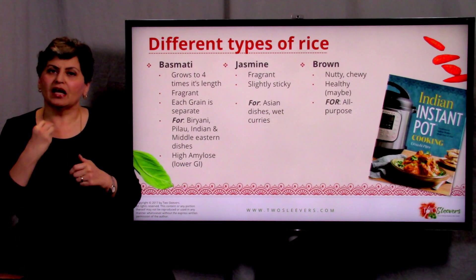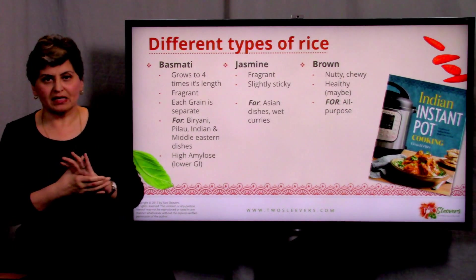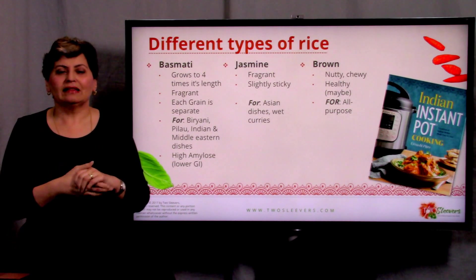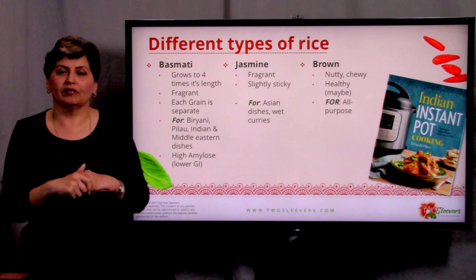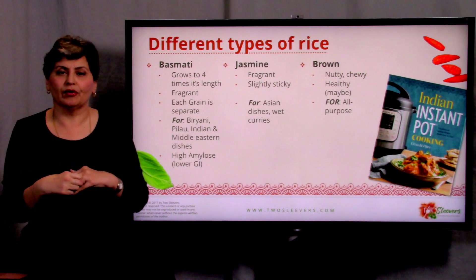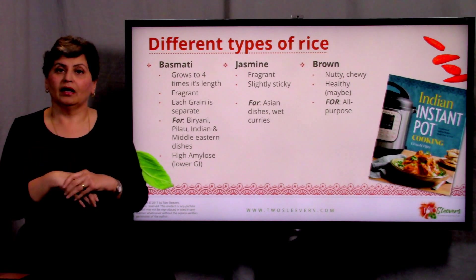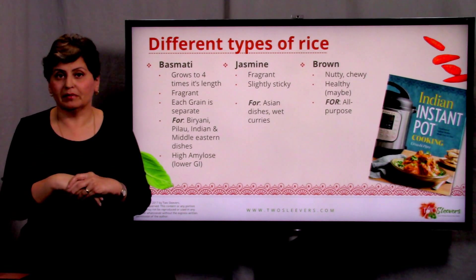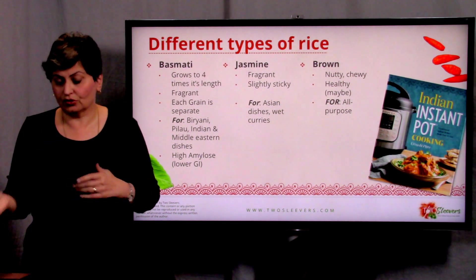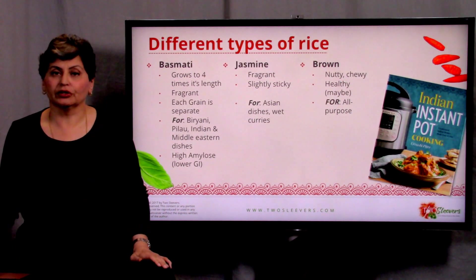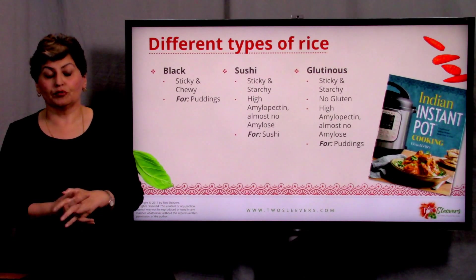Brown rice is nuttier, chewier, and all-purpose. People believe it's healthier — maybe it is, maybe it isn't. There's not that much more fiber in it, and there tend to be a few more contaminants in brown rice unless you're careful about organically grown. In the United States, most rice is sprayed with different kinds of vitamins and minerals, so white rice tends to be fairly healthy too. But some people just like brown rice, and actually in a pressure cooker it tastes exceptionally good.